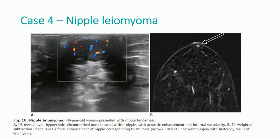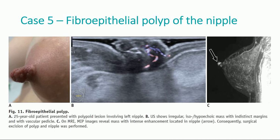Some rare benign nipple tumors. Case number four: a nipple leiomyoma in a patient that presented with nipple tenderness. The ultrasound reveals an oval hypoechoic circumscribed mass located within the nipple with acoustic enhancement and internal vascularity. The mass was also depicted on the MRI as a focus of enhancement. A fibroepithelial polyp of the nipple presented in a 25-year-old patient. Ultrasound shows the mass with the vascular pedicle and intense enhancement on MRI.